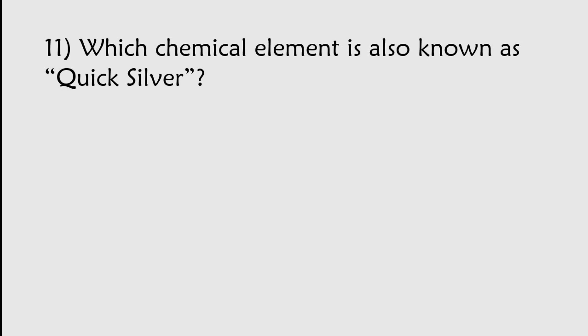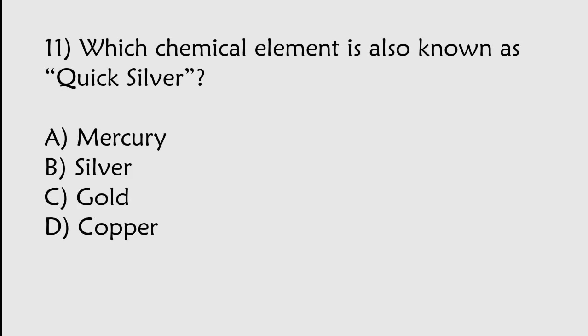Which chemical element is also known as Quicksilver? Mercury, Silver, Gold, Copper. The correct answer is option A. Mercury chemical element is also known as Quicksilver.